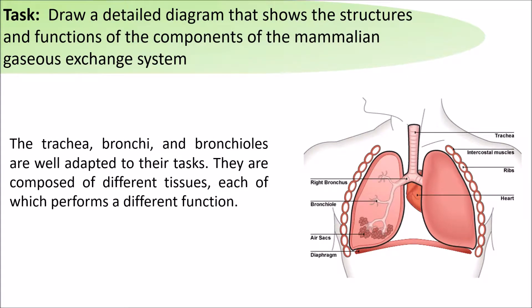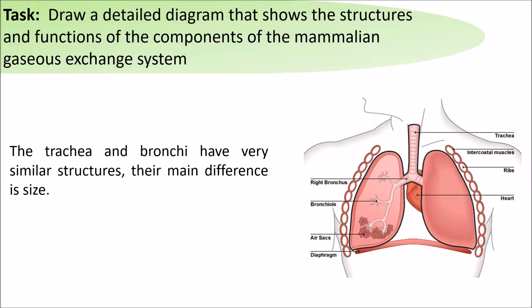The trachea, bronchi, and bronchioles are well adapted to their tasks. They're composed of different tissues, each of which performs a different function. The trachea and bronchi have similar structures, however they differ in size.